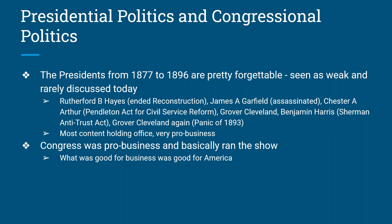From 1877 to 1896, most people can't name those presidents. There's Rutherford B. Hayes, who ends Reconstruction. Grover Cleveland becomes president twice in there. James Garfield is assassinated and he's replaced by Chester Arthur, who does civil service reform because of the assassination of James Garfield. Most of these presidents are just content holding office — they're very pro-business and they don't really stand out or do anything extra.